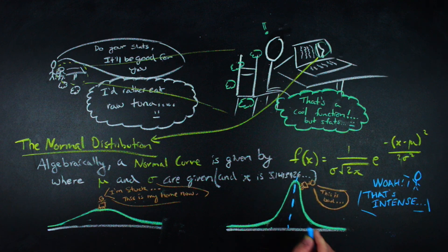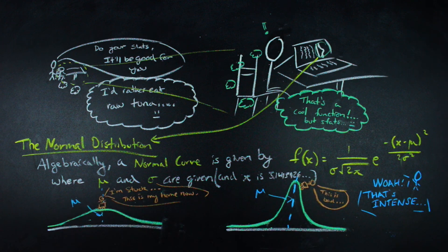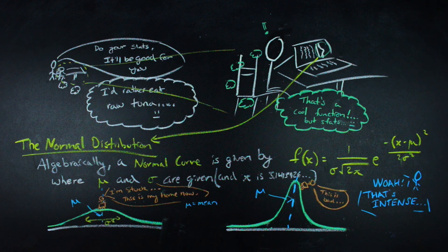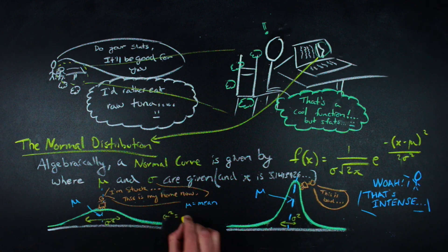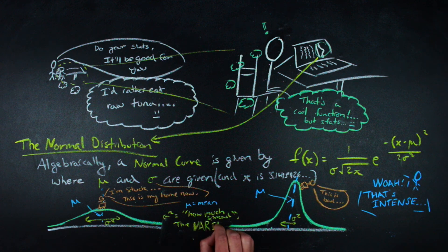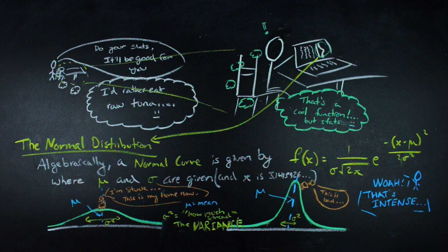Encoded into that mess of an equation is both the mean, which is the position of the peak here, and the variance, which is the measure of how spread out the graph is. In a more experimental sense, the variance gives us an idea of how much of a disparity there is between any two points in our sample.